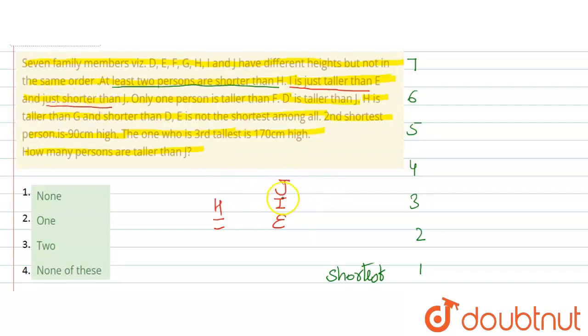That means it will be 3 people taller than F. That means confirm hai ki F, jo hai, wo second tallest person hai, because F se bada sirf ek person hai. Phir given hai, D is taller than J, yani ki J se upar D aayega aapke paas.